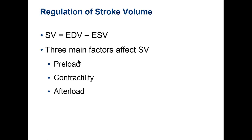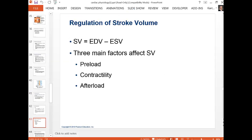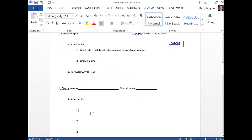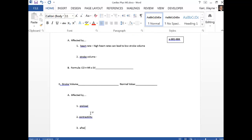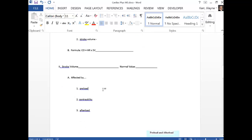Stroke volume is next on your worksheet — it's the volume of blood that leaves the heart with each beat. Cardiac output involves time — it's per minute — so stroke volume and cardiac output are closely related. Stroke volume is per beat. The three things that affect stroke volume are preload, contractility, and afterload — and this will be a guaranteed test question.